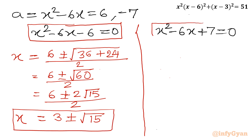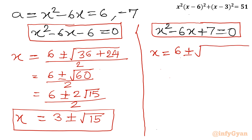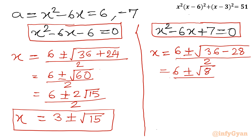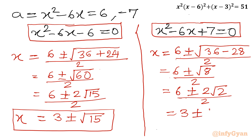Now come to the second quadratic equation x² minus 6x plus 7 equals 0. Again applying the quadratic formula: x equals 6 plus or minus √(36 minus 28) divided by 2, which is 6 plus or minus √8 divided by 2. √8 can be written as √(4×2) equals 2√2, so this becomes 6 plus or minus 2√2 divided by 2, giving x equals 3 plus or minus √2. These are the other two real solutions.